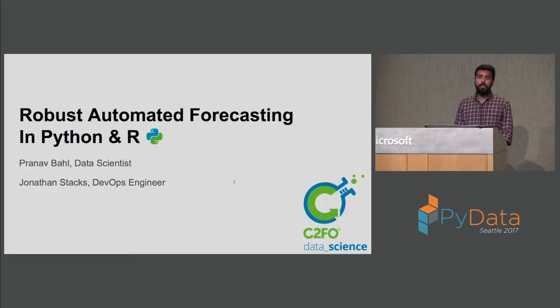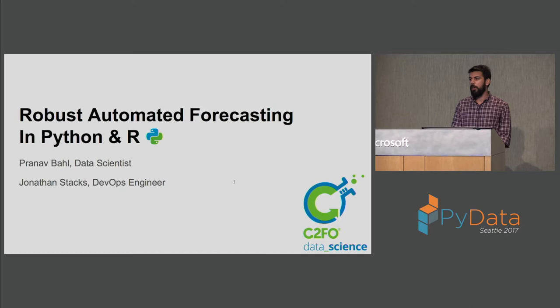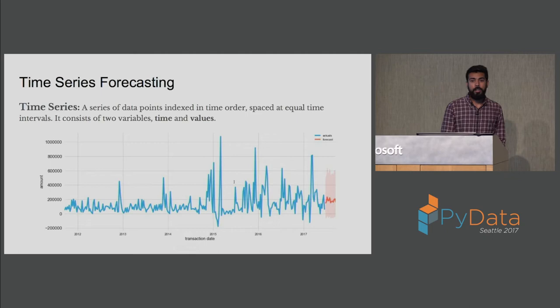Before we get started, I would like to thank the sponsors and organizers of PyData Seattle to make this amazing talk happen. I'm Pranav Behel, I'm a data scientist at C2FO, majorly involved there to build the risk management system. And this is Jonathan Stacks, he's a DevOps engineer at C2FO. Today we'll be talking about how to build a robust automated forecasting system in Python and R.